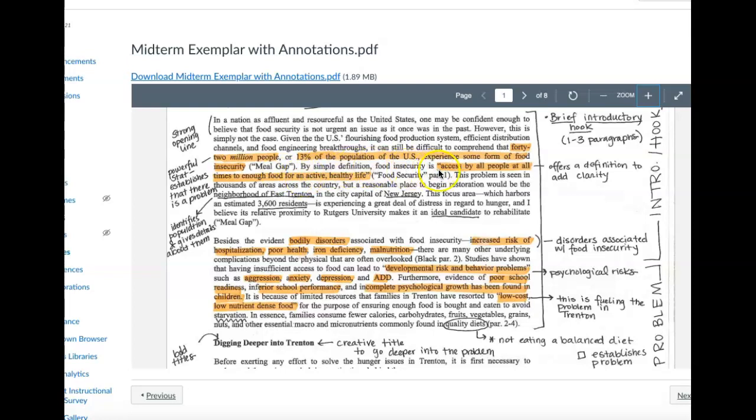By simple definition, food insecurity is accessed by all people at all times to enough food for an active, healthy life. And I think it's important that he includes the definition of food insecurity because it helps direct the purpose of his paper. You never want to offer a definition if it's too simplistic or elementary, but here it's really just directing the main focus of his paper so it works well. Once again, this is cited and because it's a direct quote, it's in quotations.